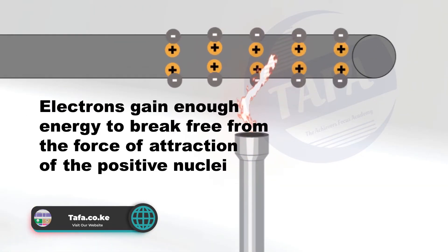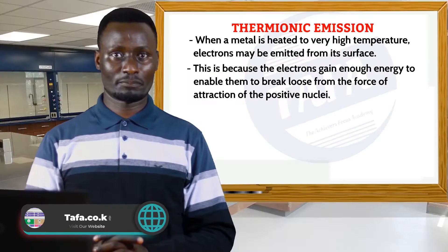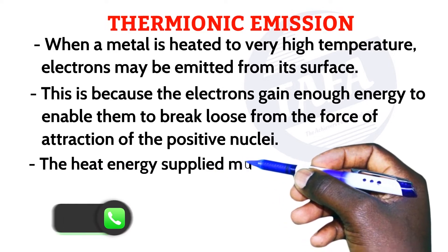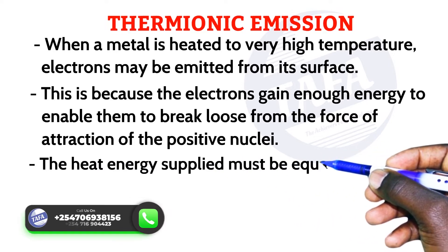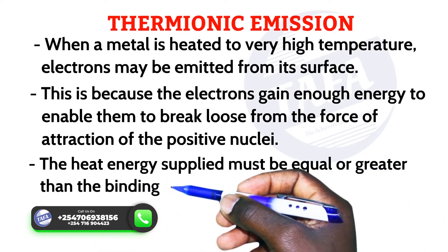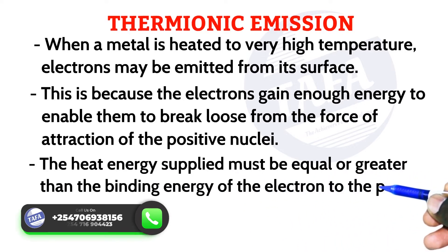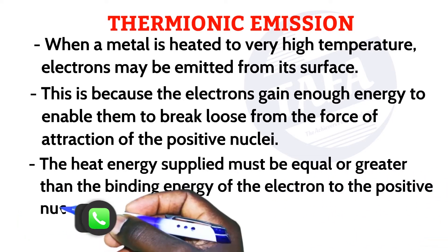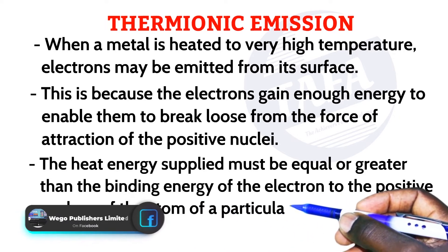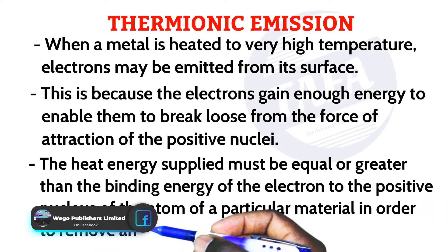The heat energy supplied must be equal to or greater than the binding energy of the electron to the positive nucleus of the atom of a particular material, in order to remove an electron from the metal surface.